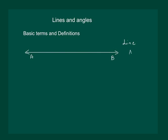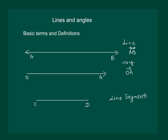And line AB is denoted by... Next is ray, which is a part of a line with one endpoint and is denoted by... Recall that part of a line with two endpoints is called a line segment and it is denoted by...